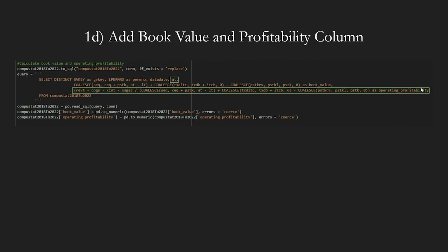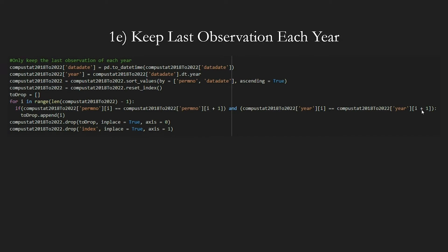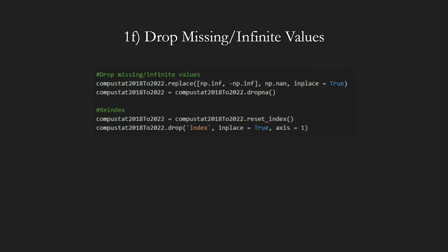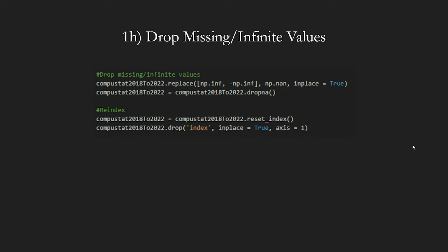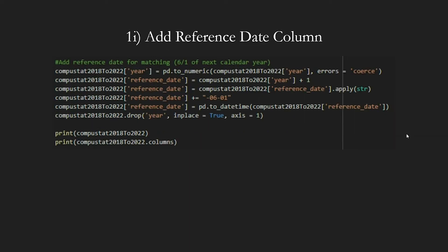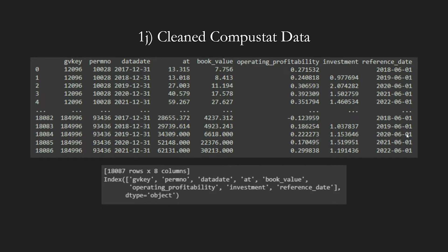In addition to adding the book value, we also include the total assets column and add the operating profitability to our ComputeStat data. For keeping the last observation of each year and dropping null and infinite values, we keep everything unchanged. Next, we add a new step to add the investment column. Since the data frame is sorted by firm identifier and date, and we only took the last observation of each year, we can check if the firm identifier equals the previous row. If so, they are data of the same firm from two consecutive years, and we take the ratio of the total assets between the columns. We also drop missing and infinite values in case of missing investment data. This is our expected output for the cleaned ComputeStat data.